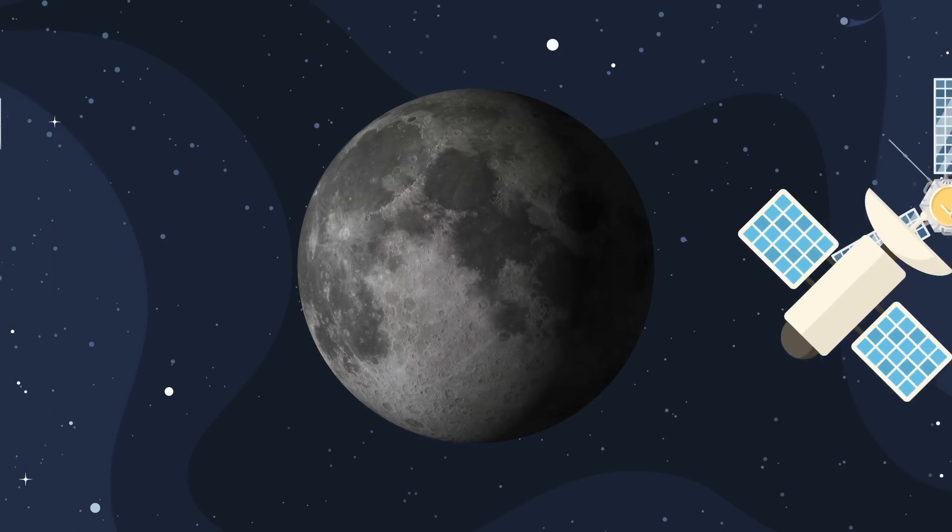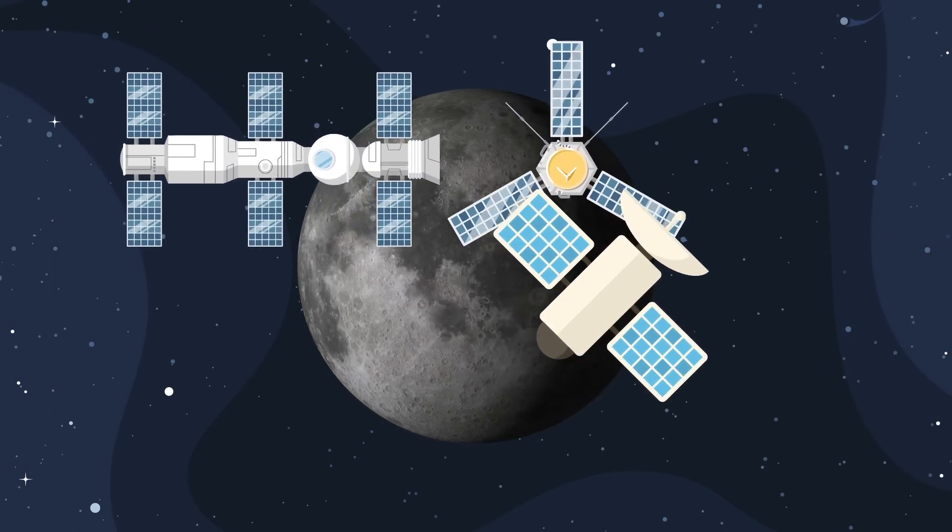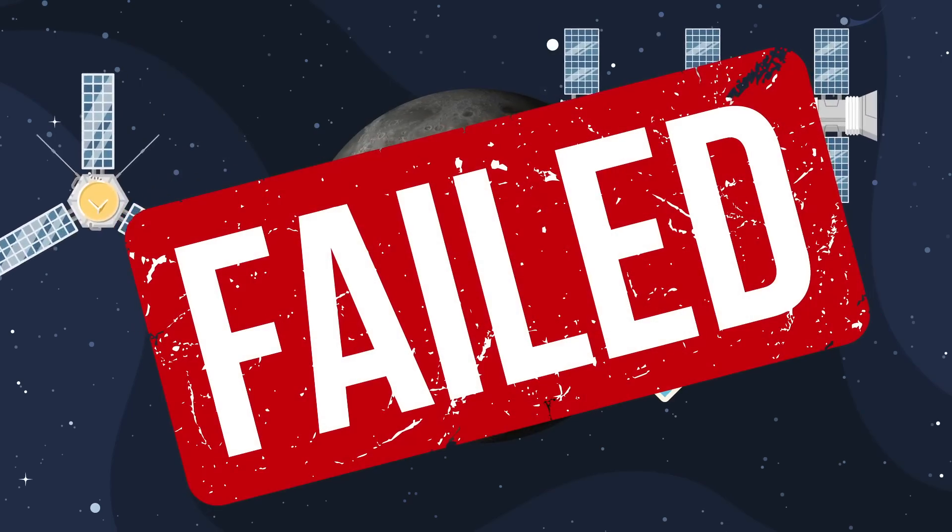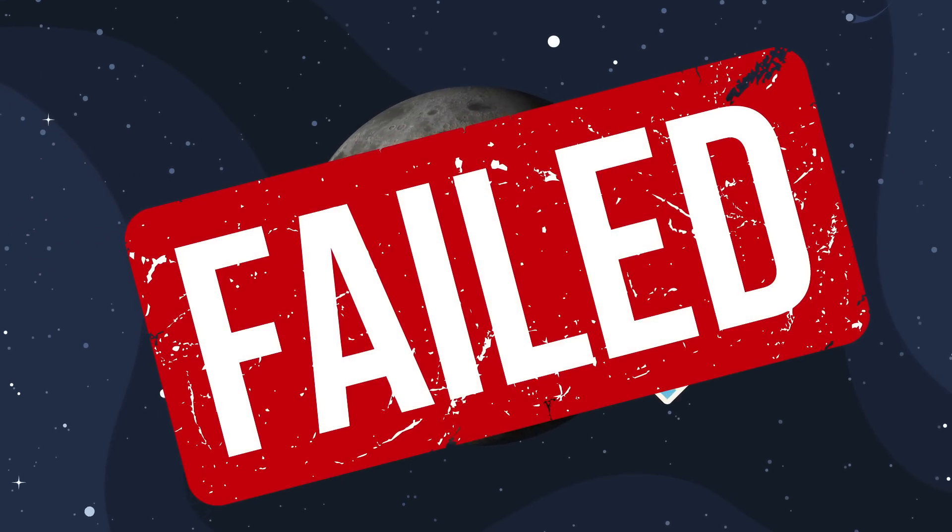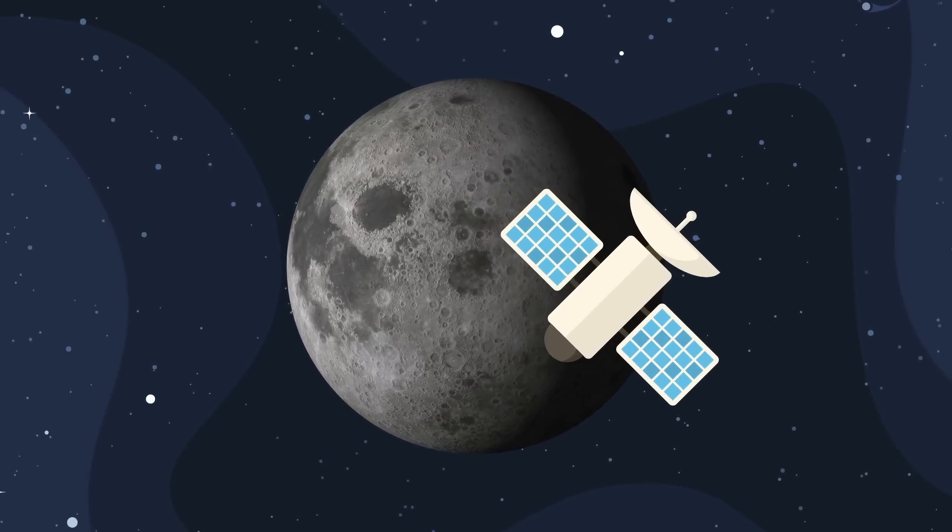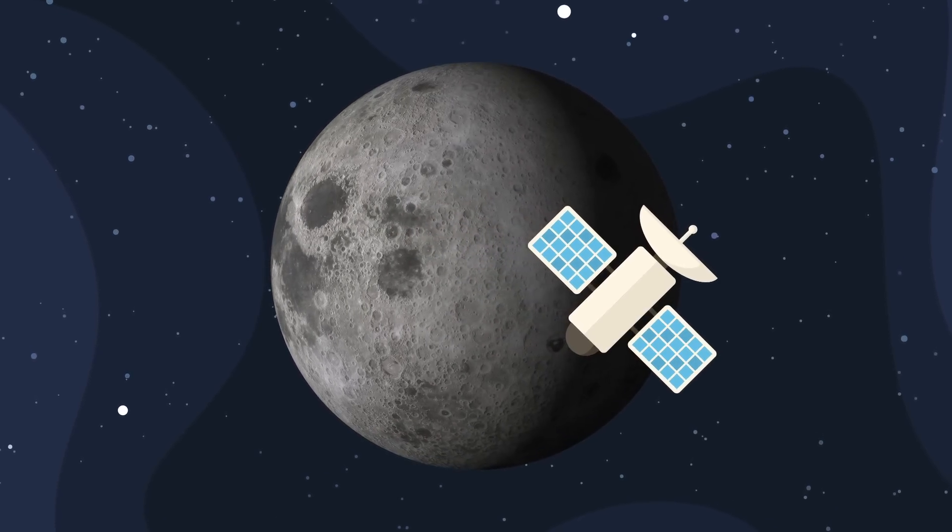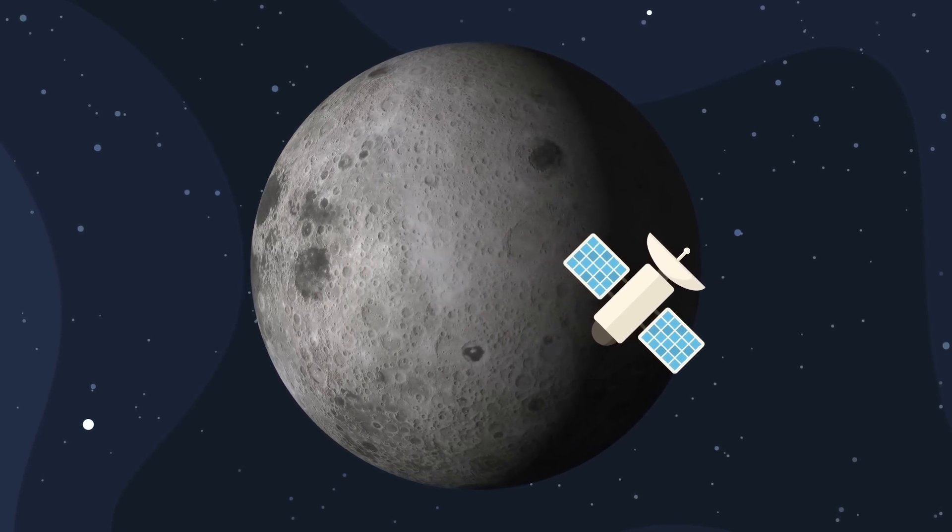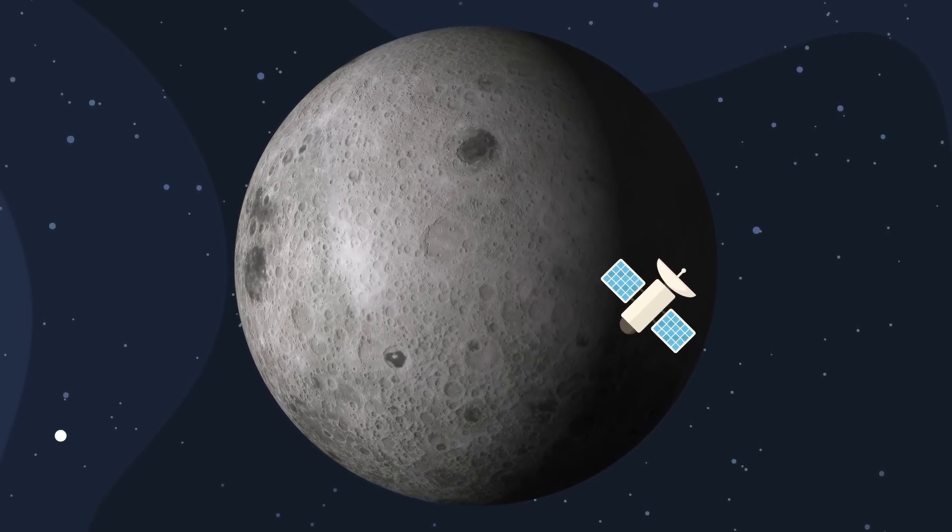You smile as you recall that this was no small feat. Several other countries had tried and failed to do what your team accomplished. Landing on the dark side of the moon is difficult because of the inability to maintain constant communication with the spacecraft. The monstrous sphere that is the moon blocks the signals between Earth and any vessel on the other side. To get around the problem, you and your team placed a satellite between the moon and Earth.